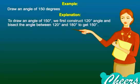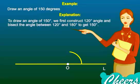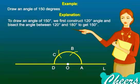Step 1: Draw a line L of any measure. Step 2: Mark a point O on it. Step 3: With O as center, draw a semicircle of any radius. Let the semicircle cut the line at A and D respectively. Step 4: With A as center and the same radius, draw an arc that cuts the semicircle. Let it cut at B. Step 5: With B as center and the same radius, cut the semicircle at point C. Step 6: Join OC. This gives us 120 degrees.